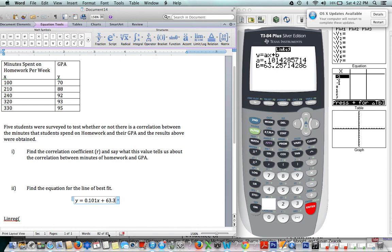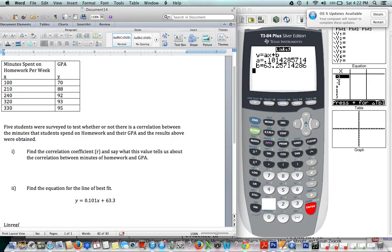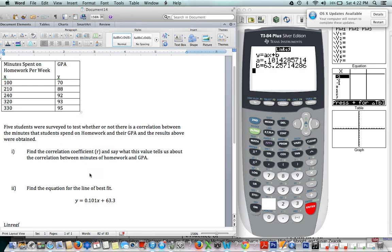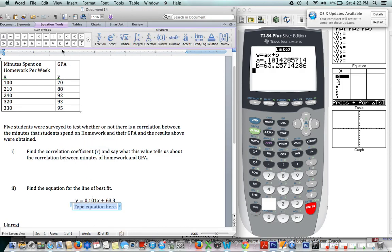And that's how X is related to Y. So that basically is saying the same thing as, I could put this in words. Y, in this case, Y is GPA. So GPA is equal to 0.101 times, X is minutes on homework, minutes, plus 63.3.